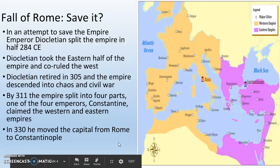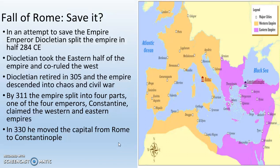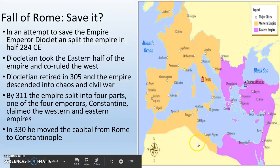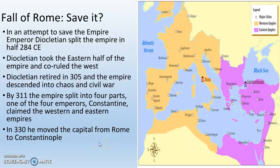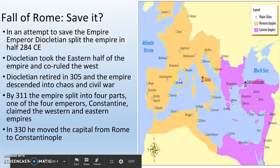The collapse of the Roman Empire was not inevitable. The emperors did lots of different things to try to save the empire. The first was Emperor Diocletian splitting the empire in half around 285 CE. Diocletian took the eastern half and co-ruled the west. So the Roman Empire was split into the Eastern Roman Empire and the Western Roman Empire.